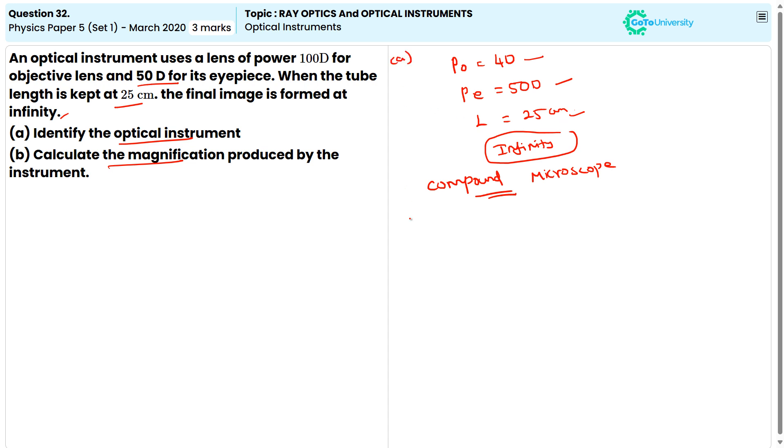Now, the second question, B, calculate the magnification produced by the instrument. So, let us find the magnification produced by the instrument, where the final image is formed at infinity.